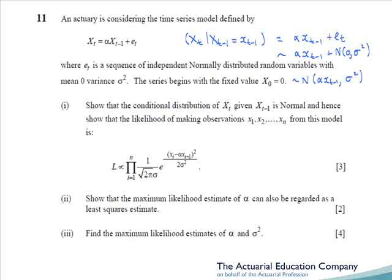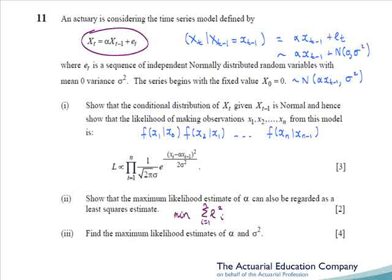Students who looked at the X4 assignment would have seen a question fairly similar to this. We now have to obtain the likelihood of obtaining these observations by multiplying the PDFs of this conditional distribution: the PDF of X_1 given X_0, times the PDF of X_2 given X_1, all the way up to the PDF of X_n given X_{n-1}. In part 2, we have to show that the maximum likelihood estimate of alpha can be regarded as a least squares estimate. The least squares estimate minimises the sum of the squared error terms, equivalent to minimising the sum of (X_i - alpha * X_{i-1})², which we can see in our numerator.